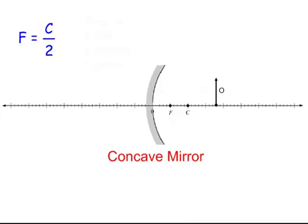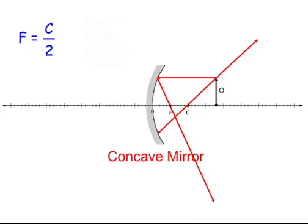For a concave mirror, mirrors have a center — called the radius — and half that radius is always the focal length. Mirrors reflect, not refract. We draw one ray parallel that reflects through the focal point, and the next ray goes straight through the center, hits the mirror perpendicularly, and reflects right back at the exact same path. The light rays meet up, so the image is real, inverted, and smaller.